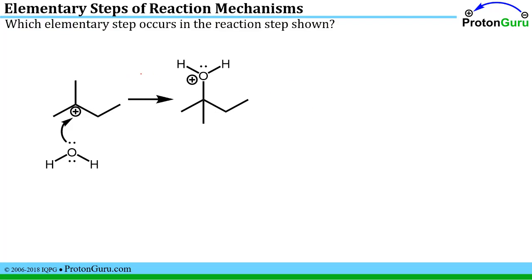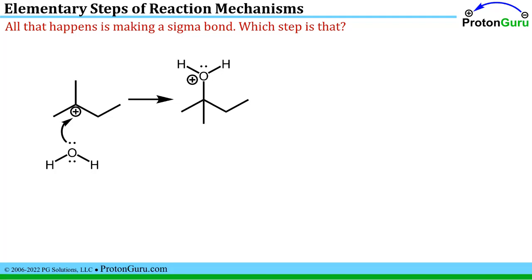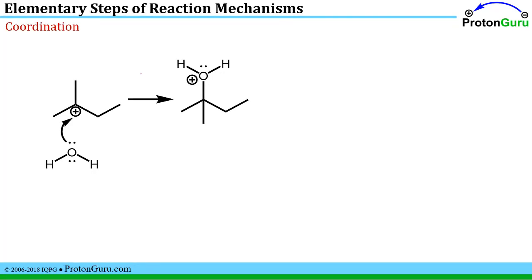In this next step, we look at this and figure out what's going on. All we're doing is sharing a pair from oxygen to carbon, and so all we're doing is making a sigma bond. If you're only making a sigma bond, what step is that? That's a coordination.